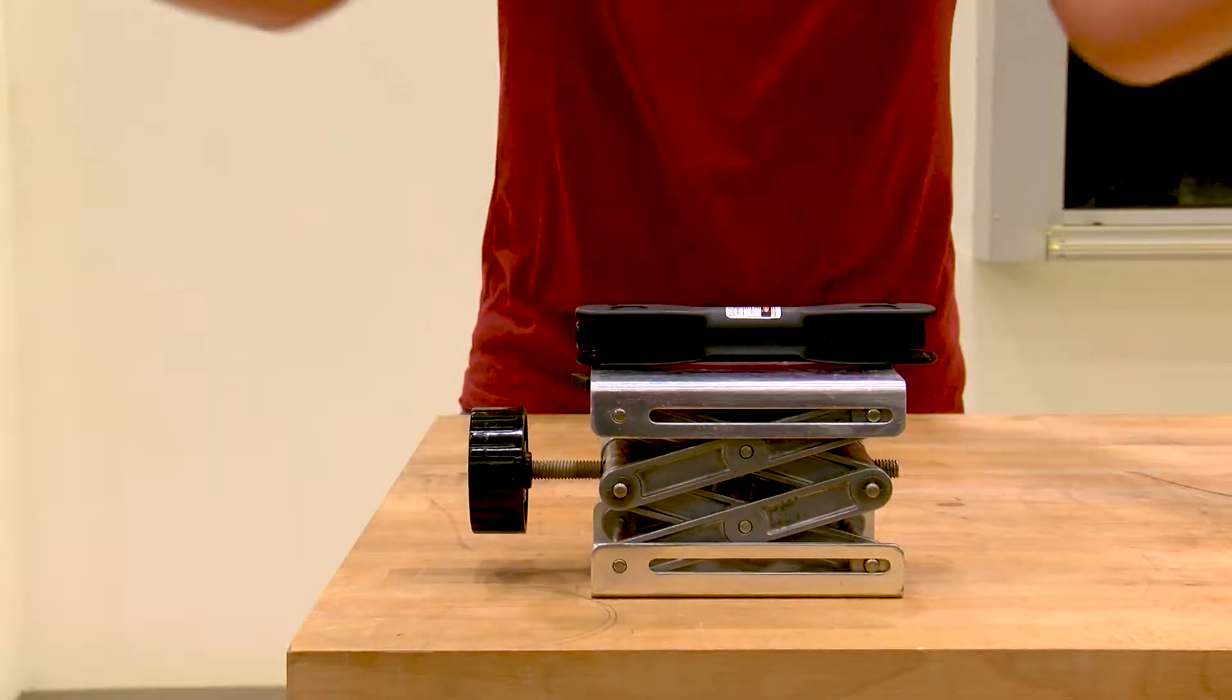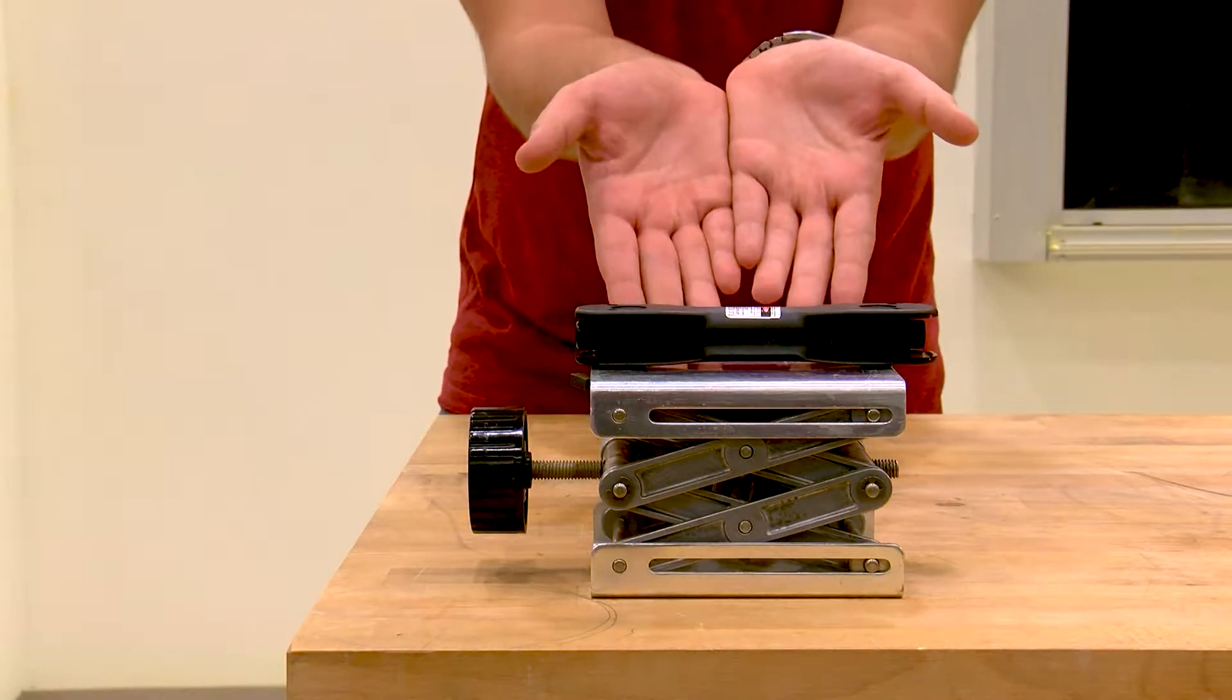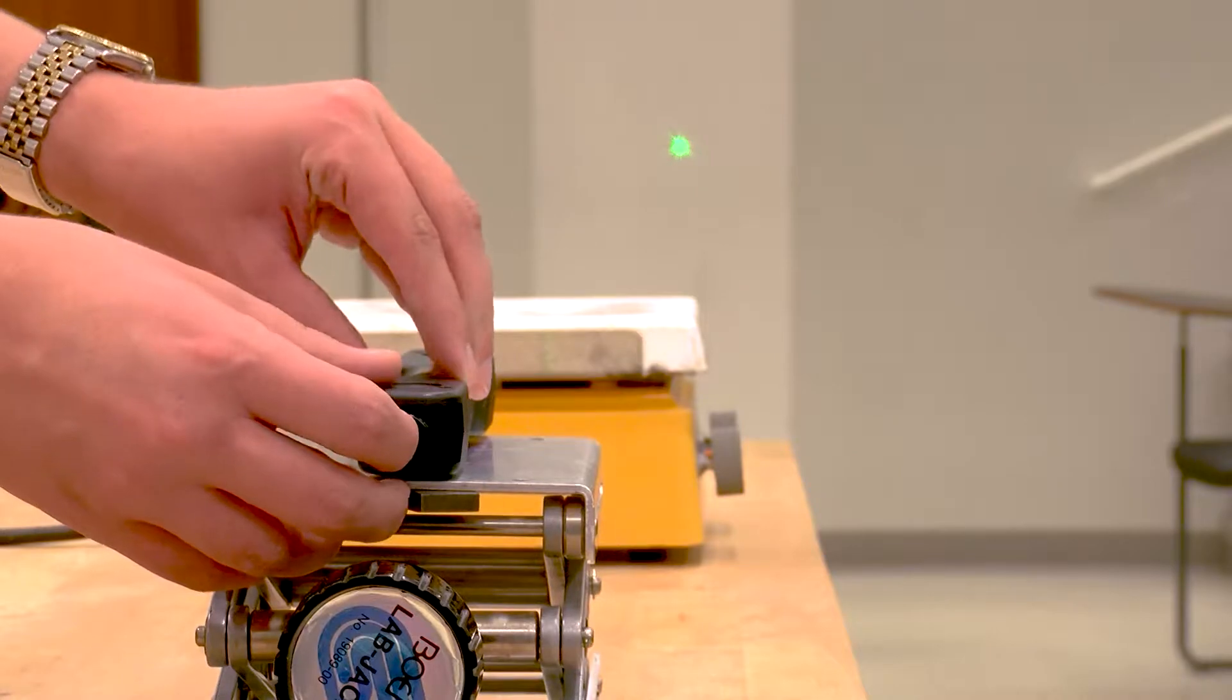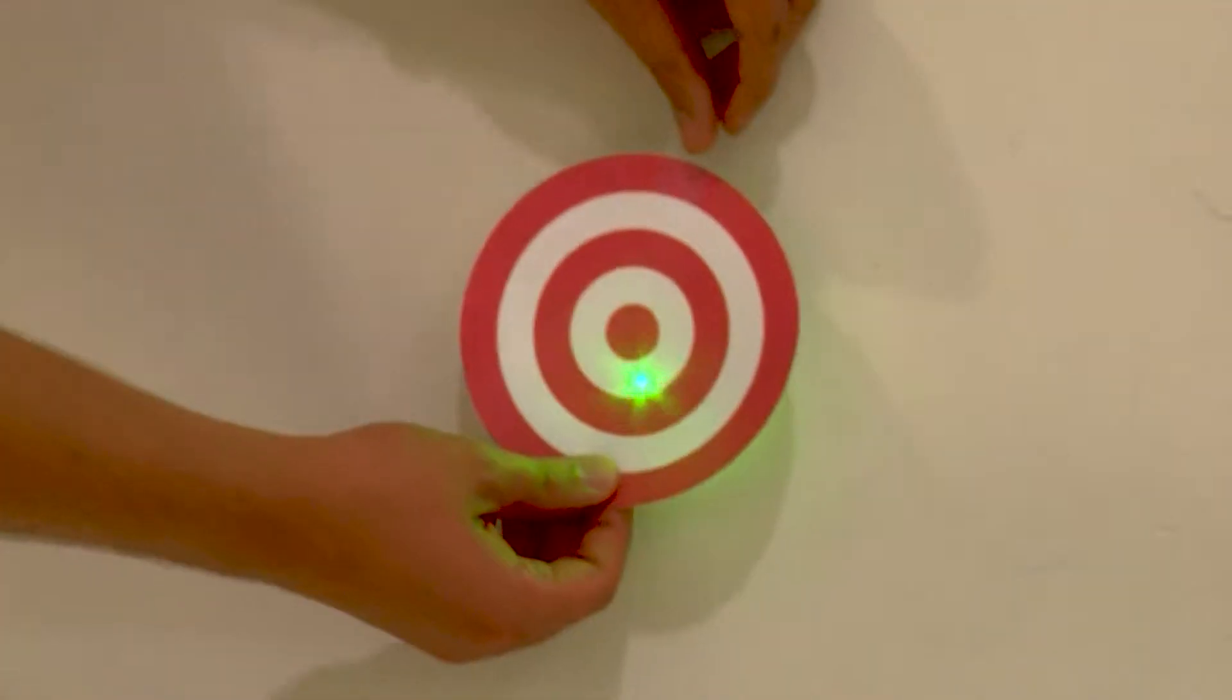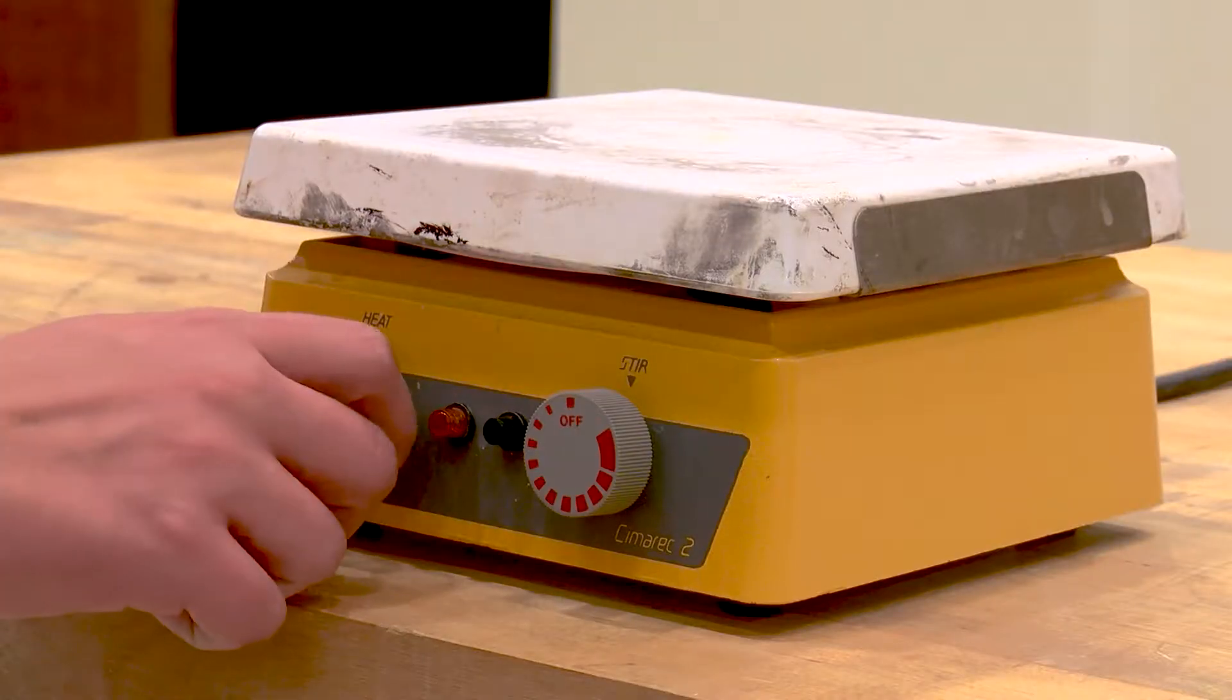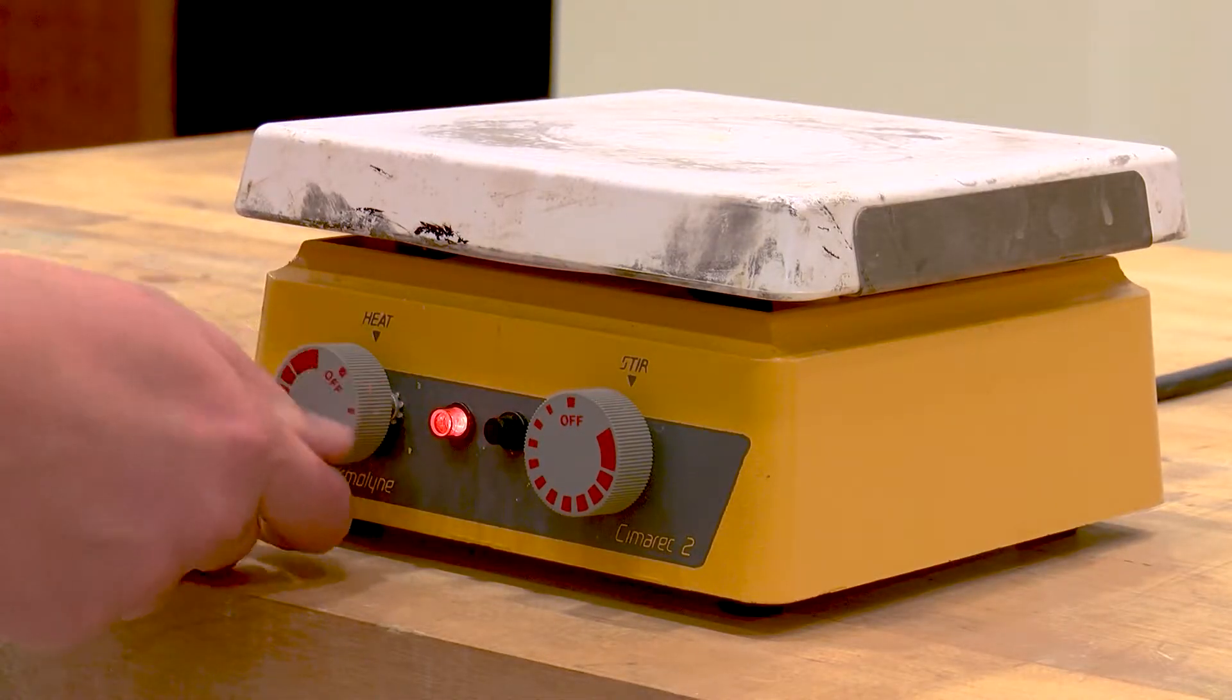We can illustrate a related phenomenon with the apparatus shown here. We turn on the laser and aim it directly at a target placed on the wall. Note that our laser is intense, steady, and rather focused. We also have a heating plate that we can turn on underneath the laser light.